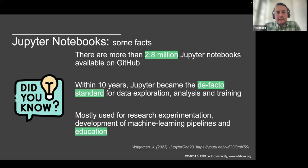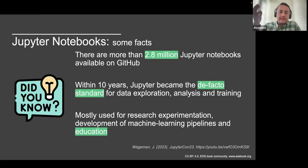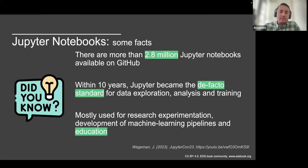For people not familiar with Jupyter notebooks, I was participating in JupyterCon last year where Julia Bachmann provided five tips about good practices for Jupyter notebooks. She shared some facts: around a billion Jupyter notebooks are available on GitHub, with estimates of 10 million total though most are duplicates. Within 10 years, Jupyter became the de facto standard for data exploration, analysis, and training — mostly used for research experimentation, machine learning pipeline development, and education.